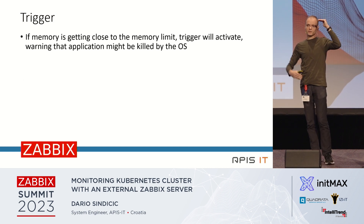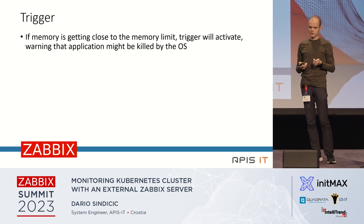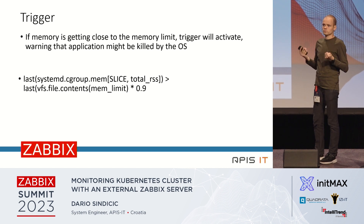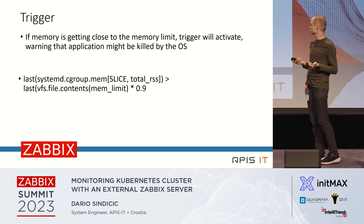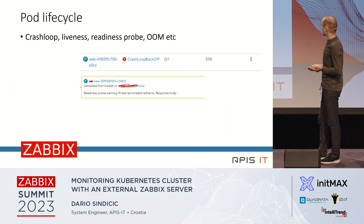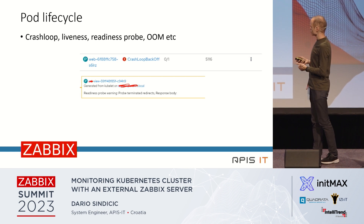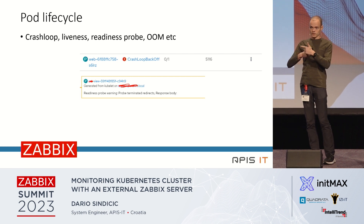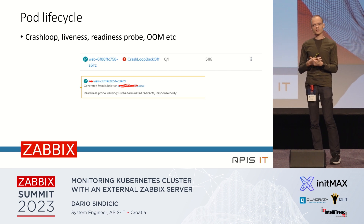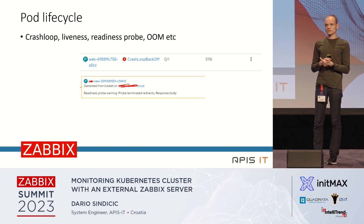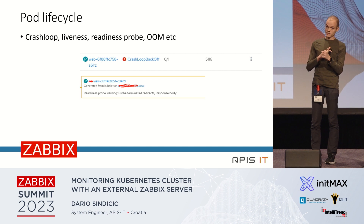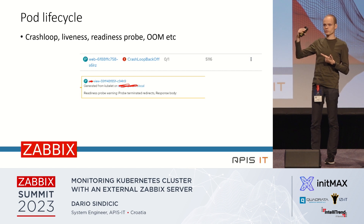Because we have both memory limit and memory utilization, we can create a trigger that fires when usage is 90% close to the memory limit, signaling that the application is at risk of being killed. We also handle crash loops, liveness probes, and readiness probes. If an application is not ready or not responding it can enter those states, which means the user experience is poor — requests may not get through.